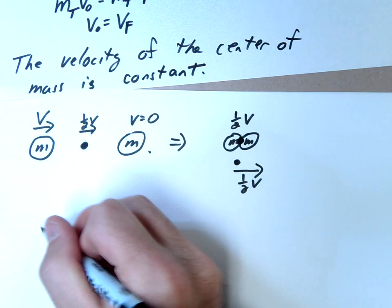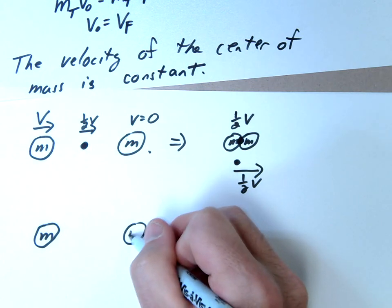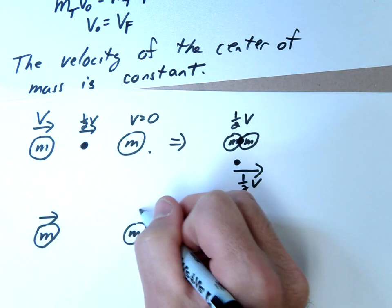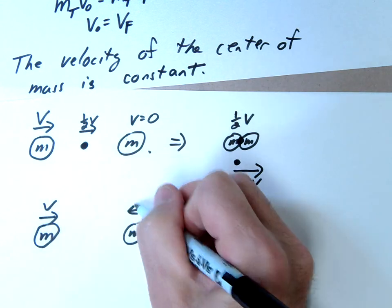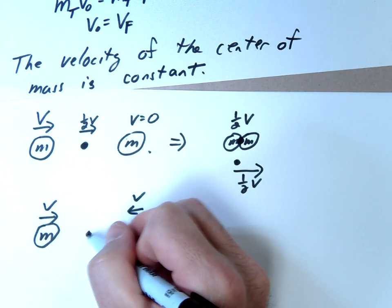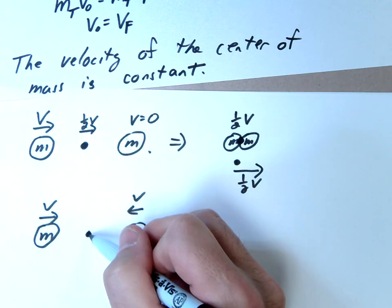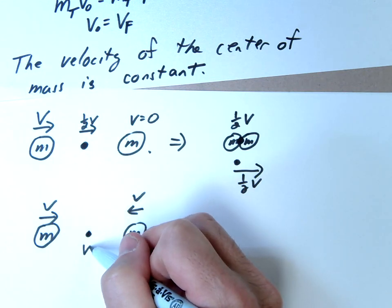Let me give you another example. Let's say we have an M here and an M here. Let's say they're both moving with V. V and V. So in this case our center of mass would be right in the center again. This one would be moving with a positive MV, this one would be moving with a negative MV. So the center of mass would actually have a velocity of zero.